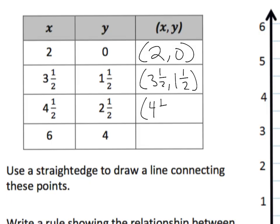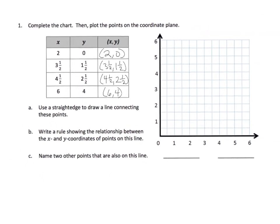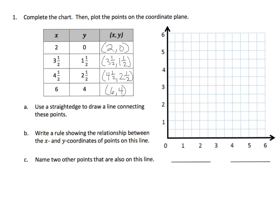These are the points we are going to plot on the graph. The point (2, 0) means x coordinate is 2, y coordinate is 0 — so the plot goes right there. Then (3.5, 1.5) puts us right there. Then (4.5, 2.5) puts us right there. And lastly (6, 4) puts us right about there. You can see we have a nice line going perfectly straight.